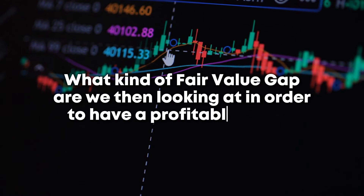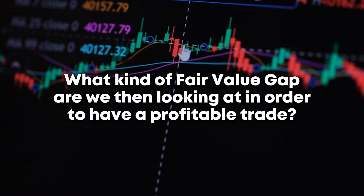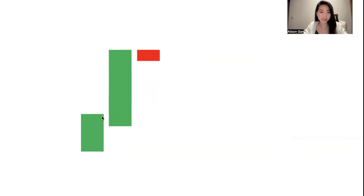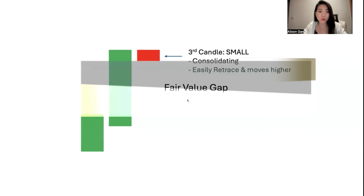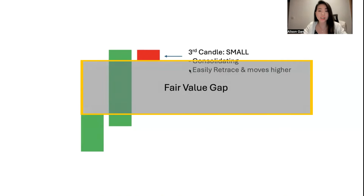So what kind of fair value gap should we look at for a profitable trade? It's very straightforward. The first candle is followed by a very huge second candle, and the third candle that we want ideally is to be a small consolidating one. A small third candle indicates the price is consolidating with not much market movement, which would allow an easy retracement for the price to move even higher in a bullish trend. The fair value gap in this case is much larger, and this would be the ideal fair value gap to trade for a profitable outcome.